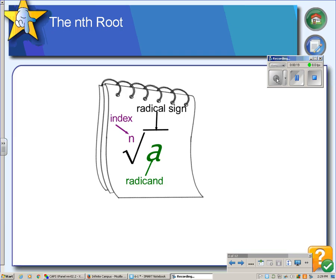So let's start with some vocabulary. If you see a radical such as this one, the number that's in the front is called the index. The symbol itself is called the radical sign, and the number under the radical sign is called the radicand.